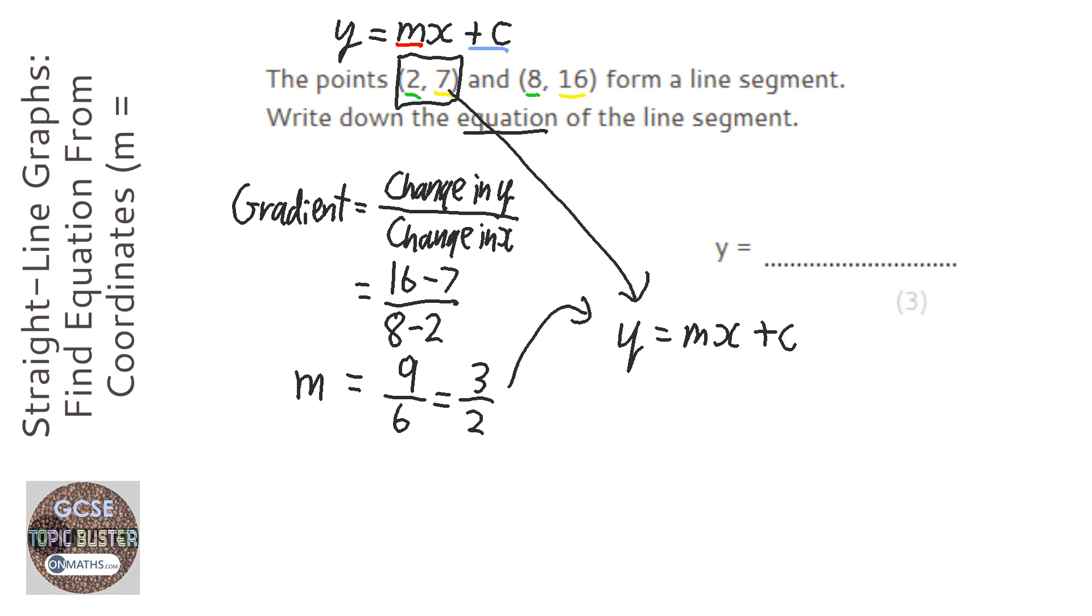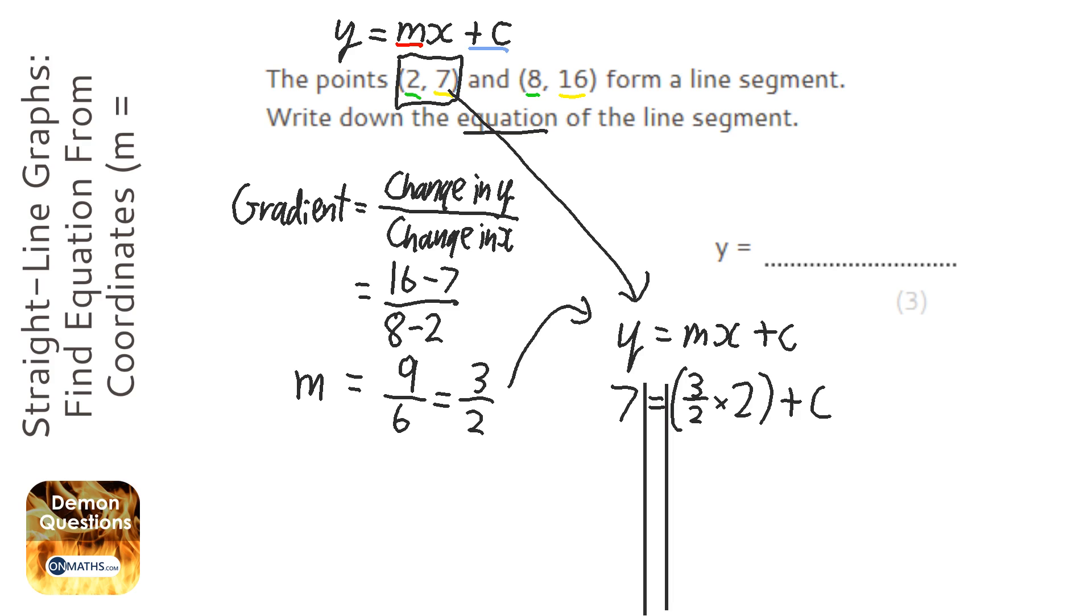So for our coordinate y is 7, m is 3 over 2, and x, and I'm going to put this in brackets to make it a bit simpler, x is 2 for our coordinate. And it's only c that we've got to find out. Okay, so I'm going to put my lines in because we are solving. We're trying to find out what c is.